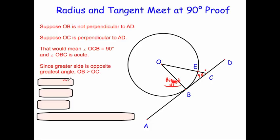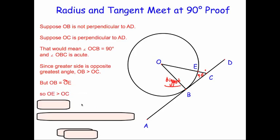Now, we know that OB is the radius, and OE is also the radius. So we're saying this radius OB is actually bigger than the line OC. But that's not true, because this line OC goes beyond the circle. If OB equals OE, and we replace OB with OE in our inequality, we get OE is bigger than OC — meaning the radius is bigger than a line that extends beyond it. Obviously, that's impossible.